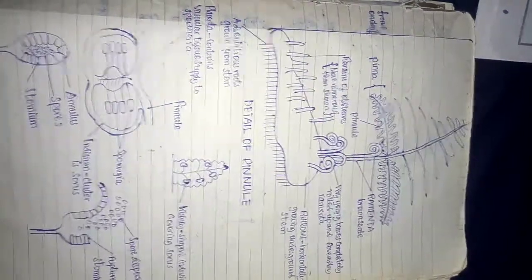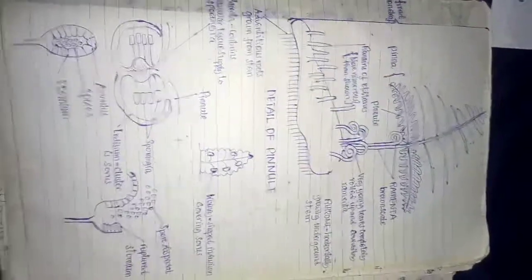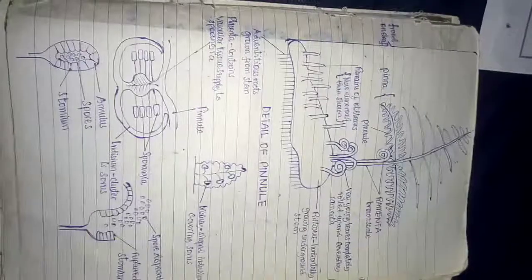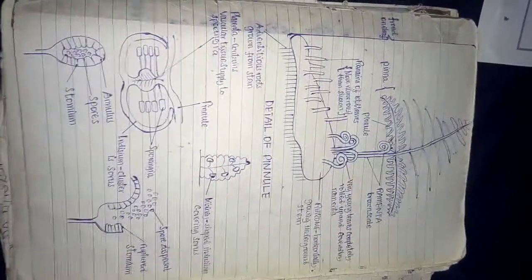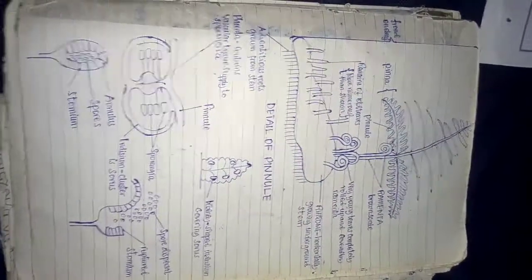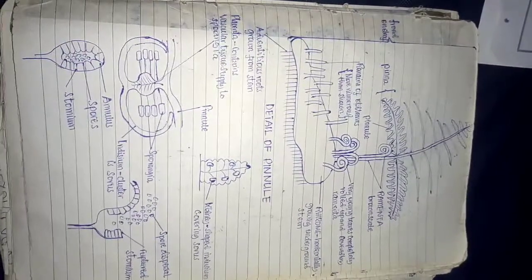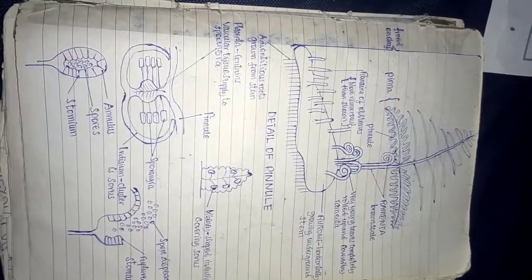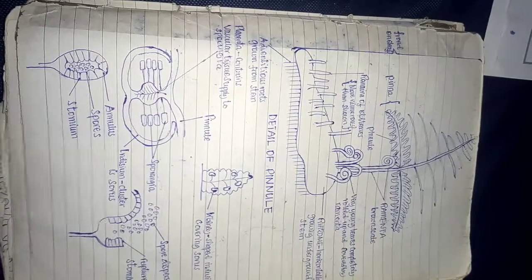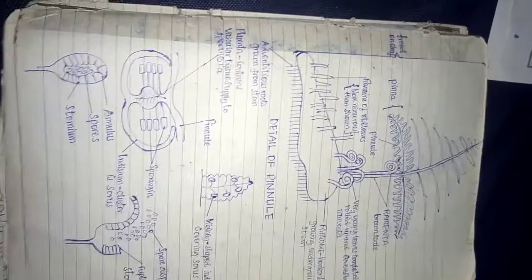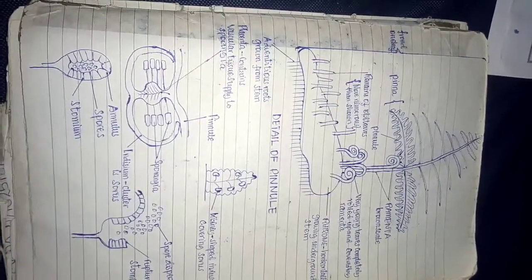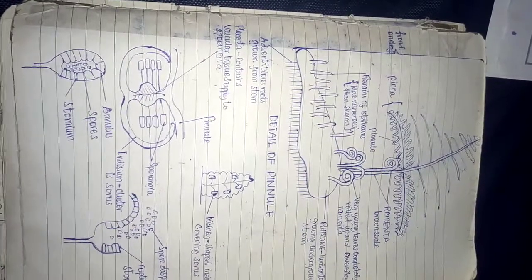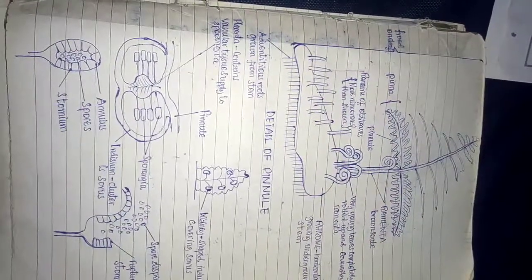Division Pteridophyta is a more advanced plant group compared to the fern-allied divisions like Division Lycophyta. Members of Division Pteridophyta are more advanced than those from previous divisions, including liverworts, mosses, Selaginella, ground pine, and horsetails — plants from Division Pteridophyta.